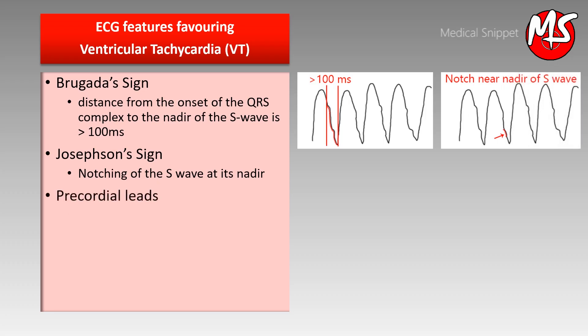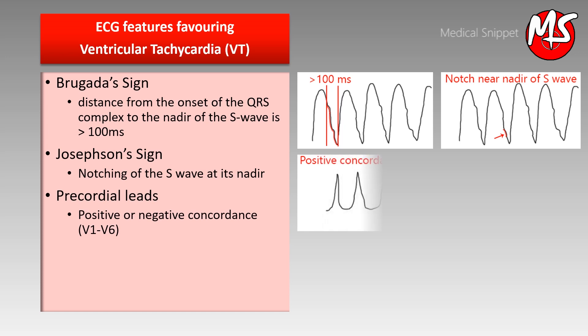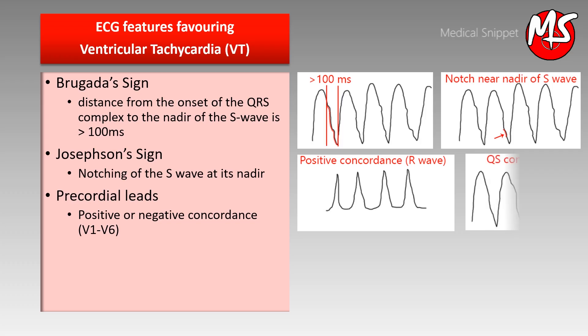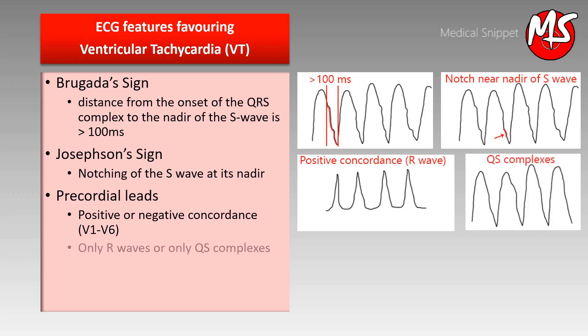In VT, precordial leads show positive or negative concordance. In positive concordance, there are only R waves, and in negative concordance, there are only QS complexes.